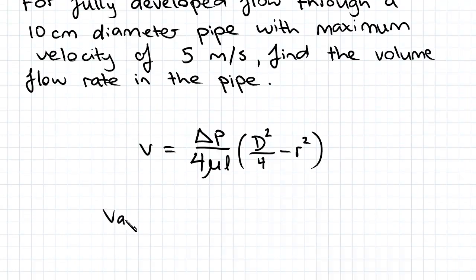We know that our V average is half of our V max, and our V max we get from the question - we've been told maximum velocity is 5m per second. So we just halve that to get our V average.